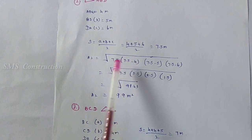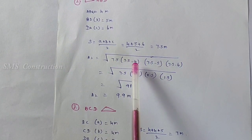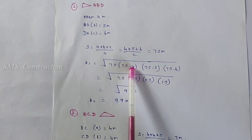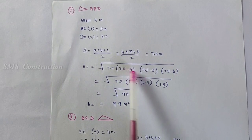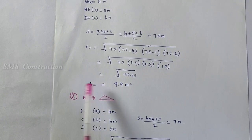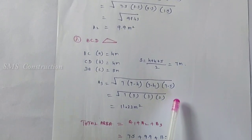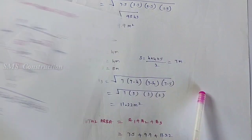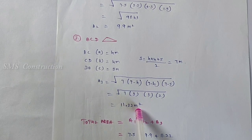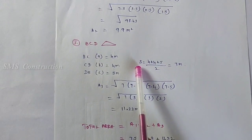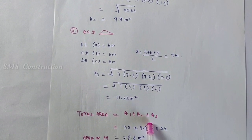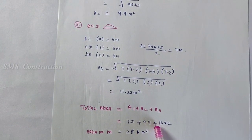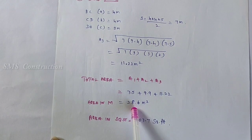Triangle 2: using the formula for S into S-A, S-B, S-C — with S value 7, A is 4 meters, B is 5 meters, C is 6 meters — the triangle 2 area value is 9.9 square meters. Triangle 3 (B-C-D) area is 11.22 square meters. Total area equals A1 plus A2 plus A3: 7.5 plus 9.9 plus 11.22 square meters.